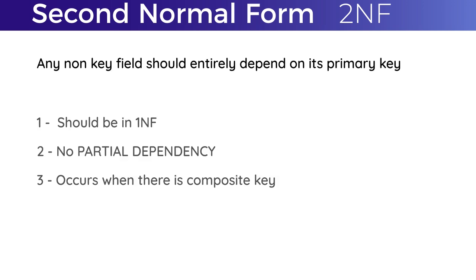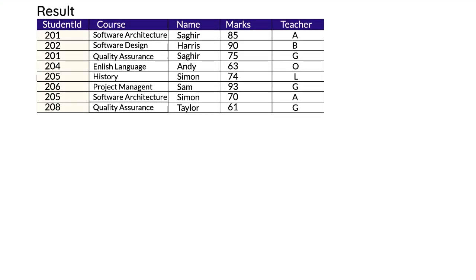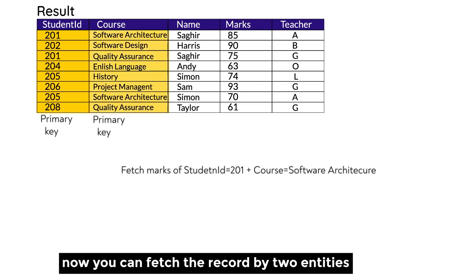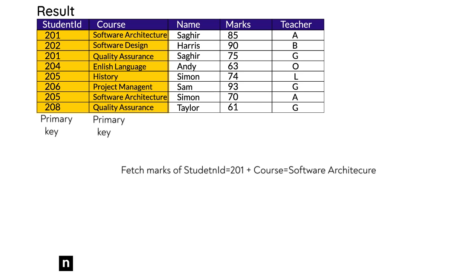For a table to be in Second Normal Form, it must first be in First Normal Form, and have no partial dependency. Partial dependency can only occur when there is a composite key. A composite key is when there is more than one primary key column, meaning we cannot identify the result from one particular column. In this example, if we only make student ID the primary key, we cannot retrieve a student's record conveniently — for instance, student ID 201 could map to Software Architecture or Quality Assurance results.